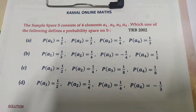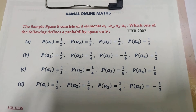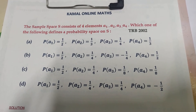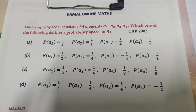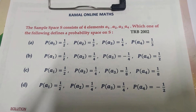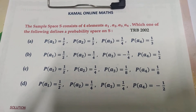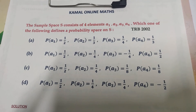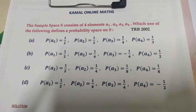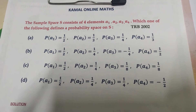Welcome to Kamal Online Max. In 2002, one probability related question. The sample space S consists of four elements a1, a2, a3, a4. Which one of the following defines a probability space on S?